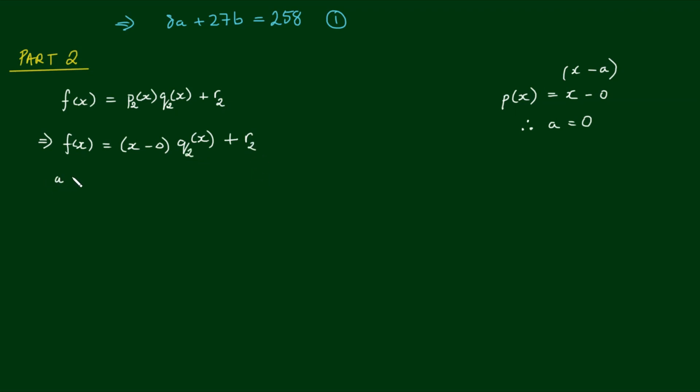So with a equals 0, and applying the polynomial remainder theorem, we get f at a equals 0 is equal to the remainder r2, and we know we're given that the remainder is equal to 6. So f at 0 is equal to a times 0 cubed minus 8 times 0 squared minus 9 times 0 plus b, and that's equal to 6, which is the remainder that we're given. So the first three terms all go to 0, because anything times 0 equals 0. So the value of b is simply 6.